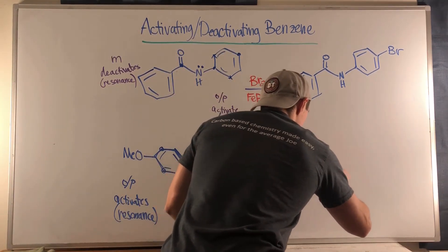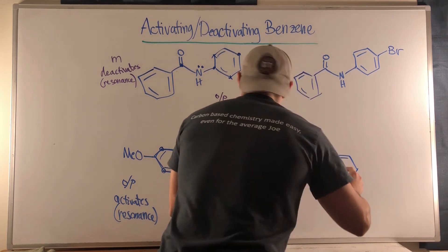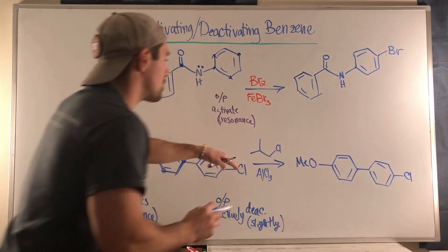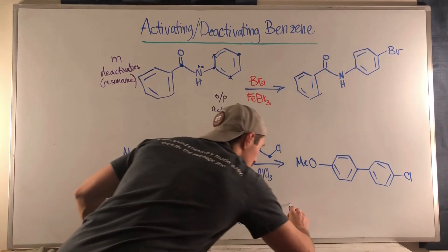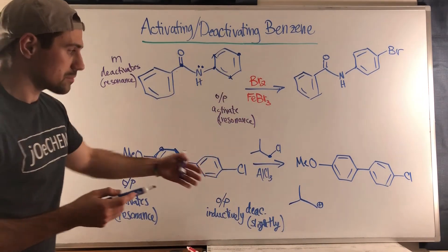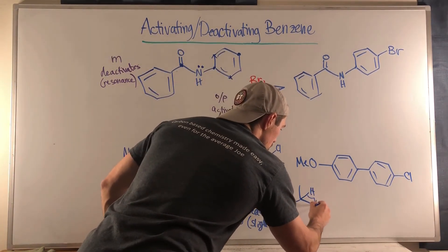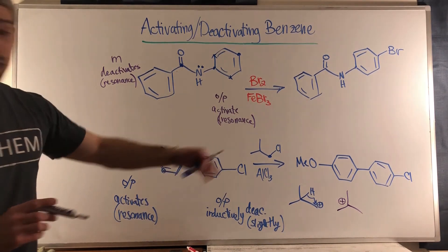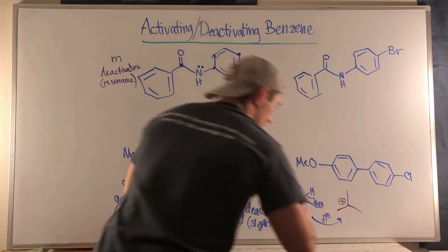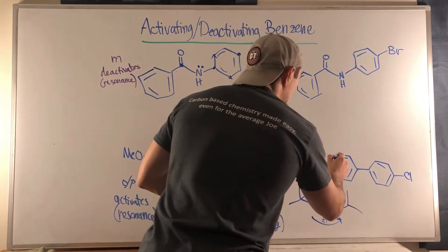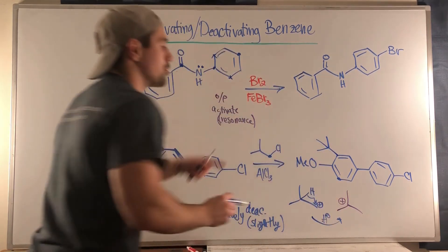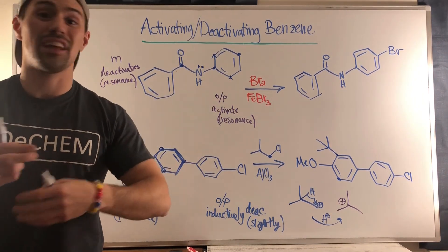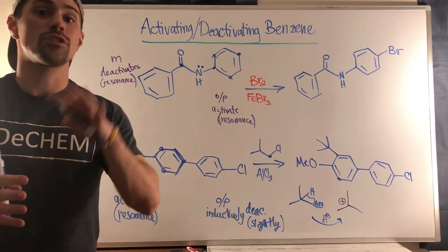Let me also point out that I snuck in a carbocation shift in this Friedel-Crafts alkylation. Remember, when you do your Friedel-Crafts alkylation, you look at the carbon attached to the chlorine and first generate the carbocation — but then you look for shifts. This will shift over, and the benzene will actually be attaching to the tertiary carbocation after the hydride shift. So you'll be putting a t-butyl group at the ortho position — or at the other ortho position as well. If Friedel-Crafts alkylation seems unfamiliar, go back to the benzene mechanism video.